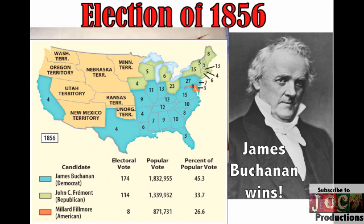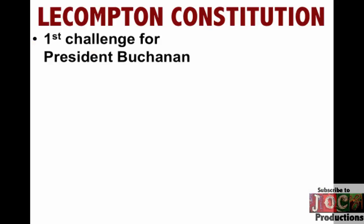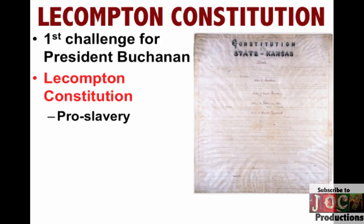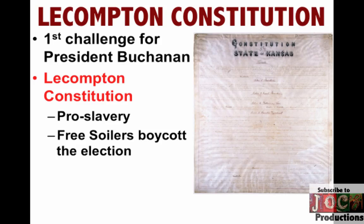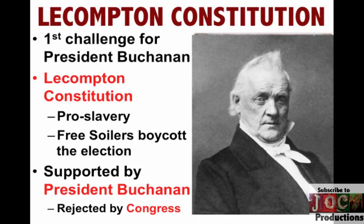James Buchanan faces one crisis after another after winning the presidency in 1856. What happens in Kansas is the Lecompton Constitution — drafted by pro-slavery supporters in Kansas, setting up a pro-slavery constitution for the territory. It passes because free-soilers boycott the election, feeling that people crossing the border from Missouri are corrupting the process of popular sovereignty. The Lecompton Constitution is approved and supported by President Buchanan, but ultimately rejected by Congress. Popular sovereignty was proving to be a failure.